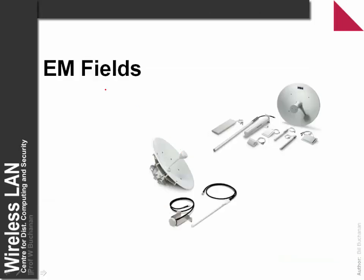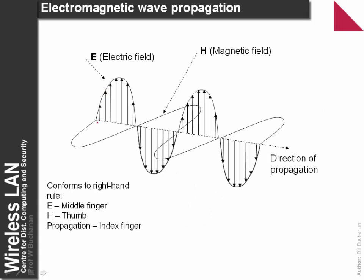So what are electromagnetic fields? Basically, an electromagnetic wave propagates with an E field, or electric field, an H field, or magnetic field, and some form of direction. When we have a change in the electric field, it causes a change in the magnetic field, which then causes a change in the direction of the wave.